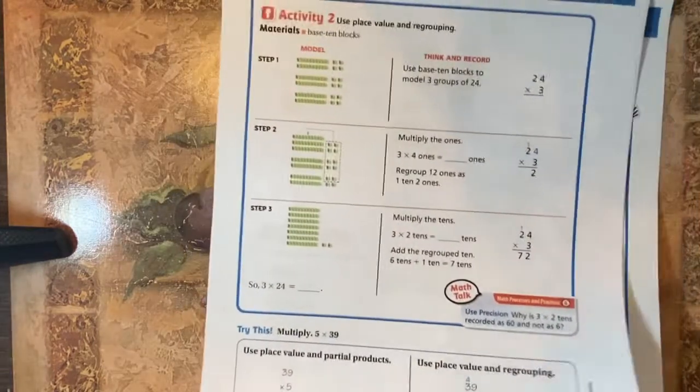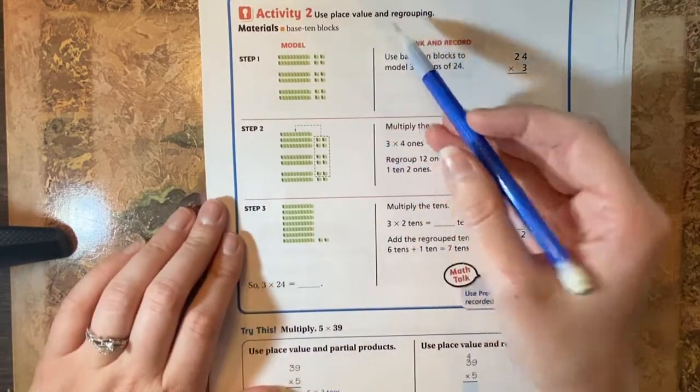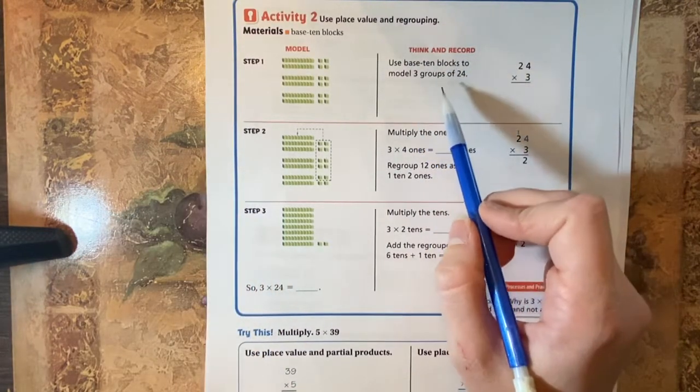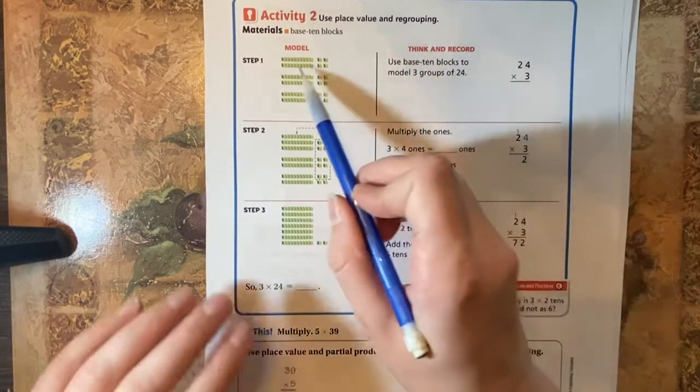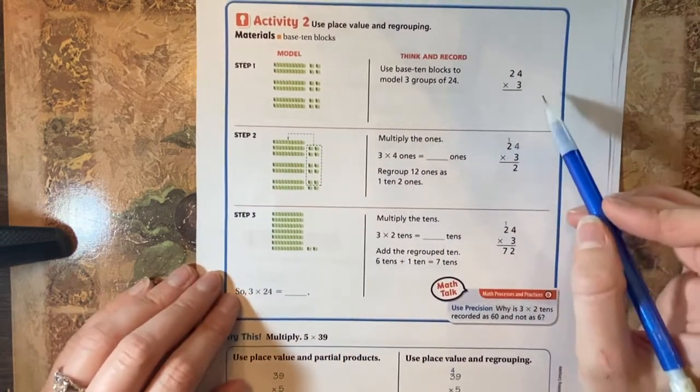So let's do another example here. This one is using place value and regrouping. So we're going to use the base 10 blocks to model three groups of 24. So here again, we have 24, 24, 24, and we're going to go ahead and get this started.